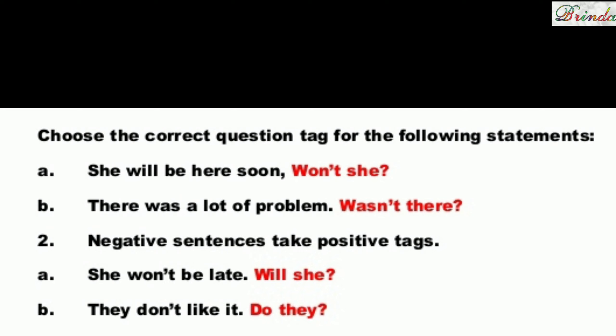Negative sentences take positive tags. She won't be late — 'won't' is negative, so the tag is positive: will she? They don't like it — 'don't' is negative, so the positive tag is: do they?